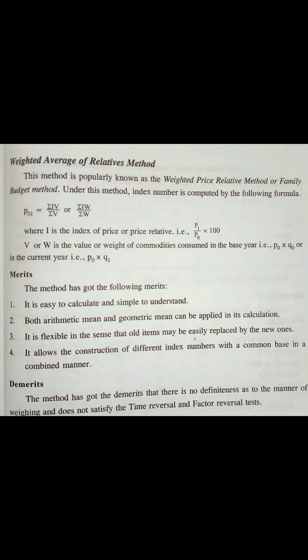Firstly, if you are not given i, you need to find the value of i by dividing P1 by P0 into 100. This is how we will find i. Then subsequently you will be multiplying that with the V or W, the weights.